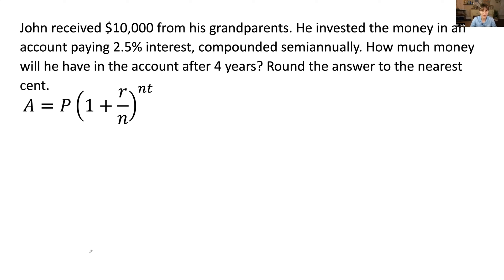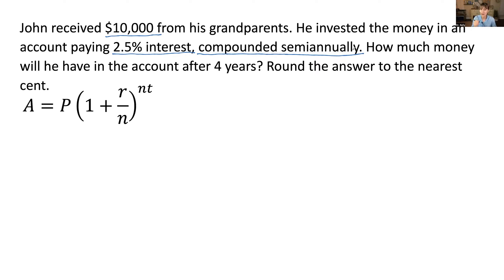Let's read the problem carefully and underline what we need. John received ten thousand dollars from his grandparents. He invested the money in an account paying 2.5 percent interest, compounded semi-annually. This is the most important keyword — compounded semi-annually — because when you have the word 'compounded' it means you will use the formula for compound interest.